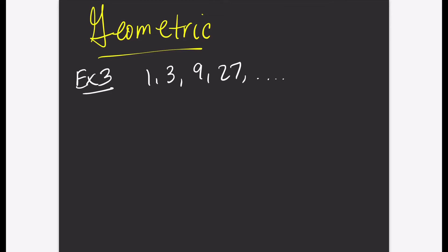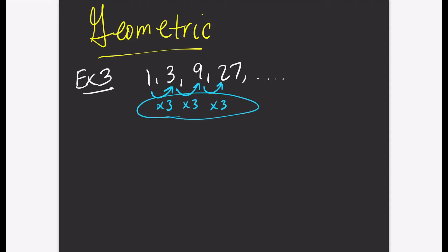Now that we discussed arithmetic, let's go to geometric sequences. A geometric sequence is a sequence where you multiply by the same number every time. In this sequence, the first term is 1, second is 3, third is 9, fourth is 27. To get from 1 to 3 you multiply by 3, from 3 to 9 you multiply by 3, and from 9 to 27 you multiply by 3. That's called a common ratio, and the common ratio here is 3.